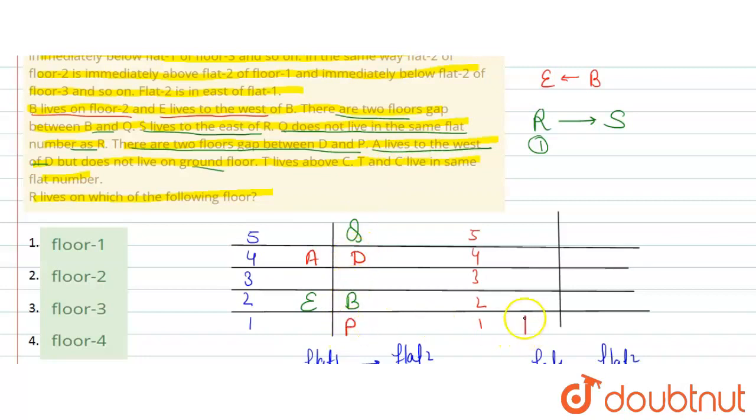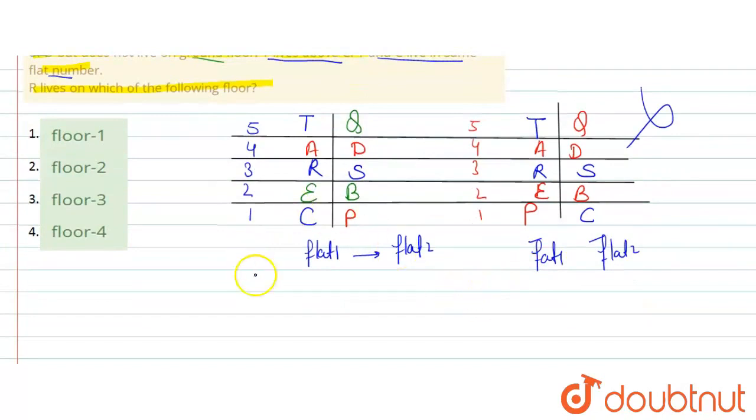So, in case 2, P can come here or here. And A and D are confirmed. Here we have Q, here we have E and B. And for R or S, here is R and here is S. In this case, here is R and here is S. Then given is T lives above C and both same flat number. So, here T and here C. In this case, here T and here C. One in flat 1 and one in flat 2. This way would be wrong because both same flat number. So this is the correct answer.